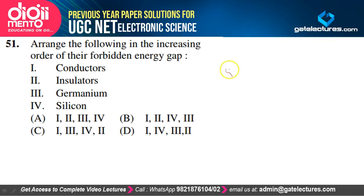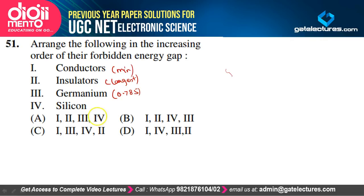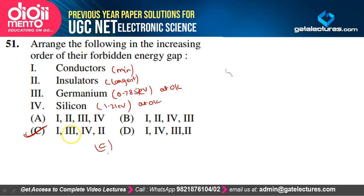Arrange in increasing order of forbidden energy band gaps: conductors have minimum band gap, then germanium (0.785 eV at 0 K), then silicon (1.21 eV at 0 K), then insulators with the largest band gap. Option C is correct.